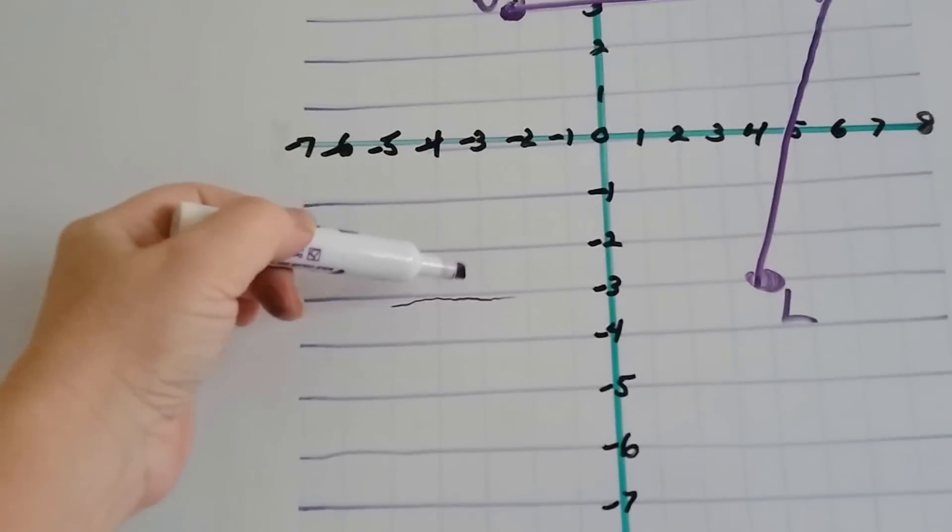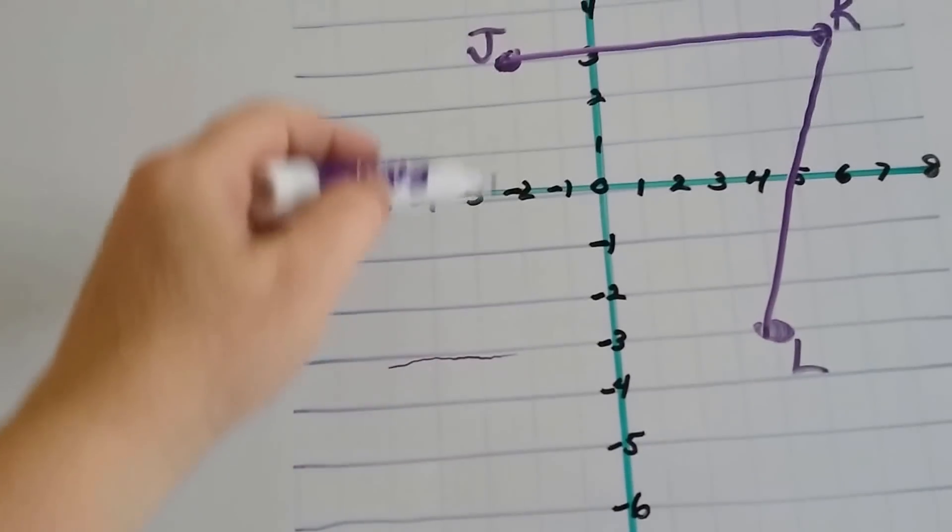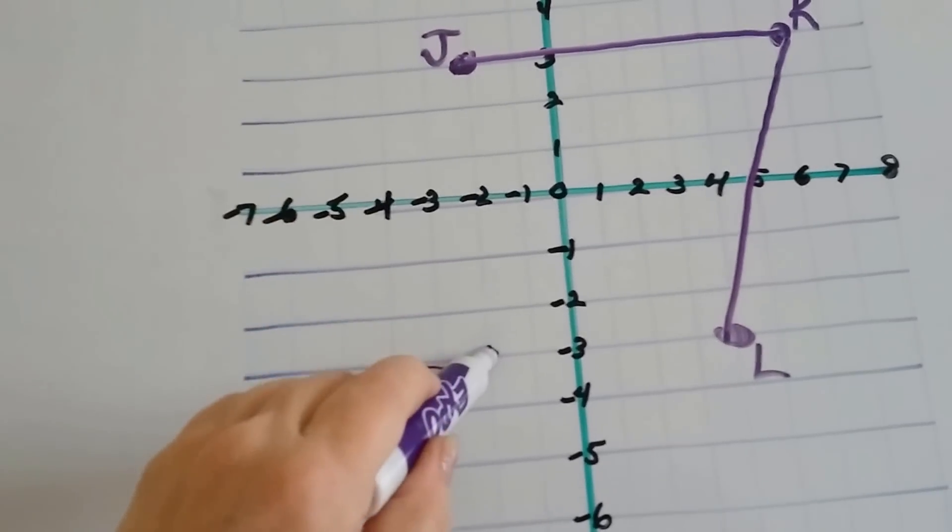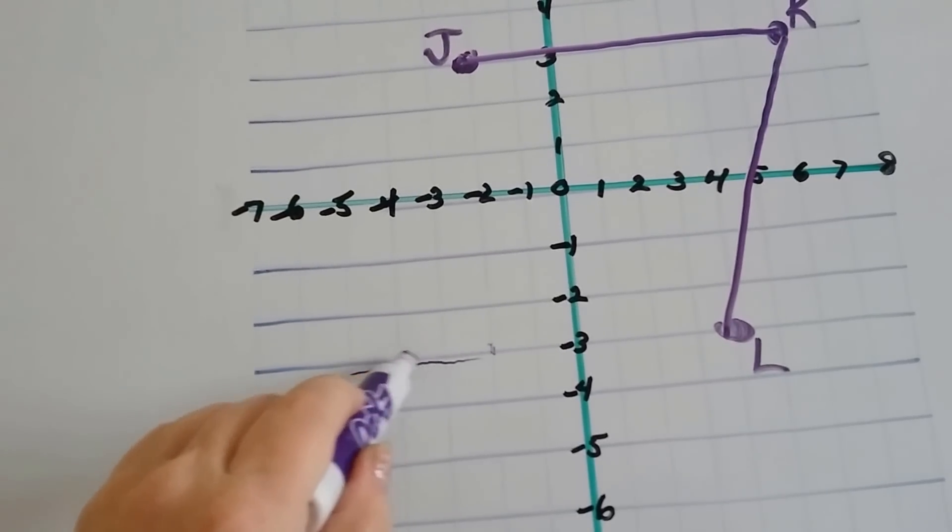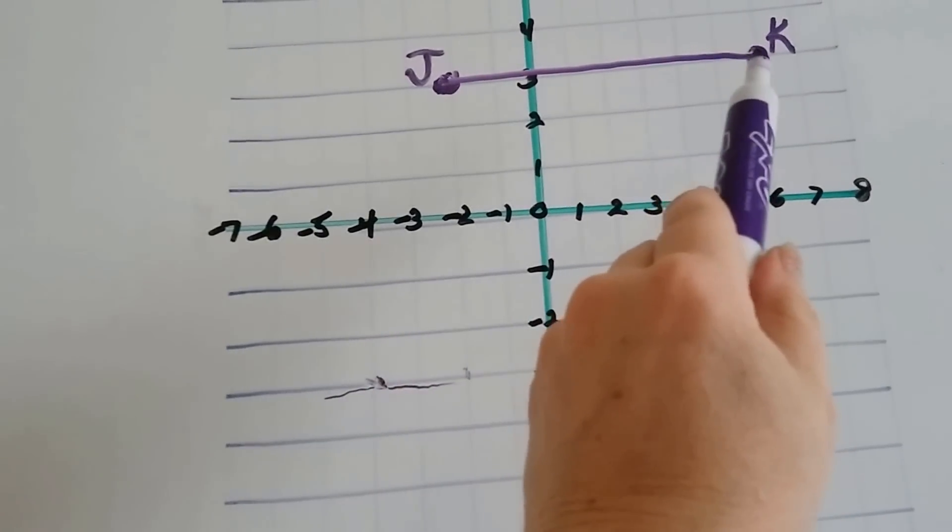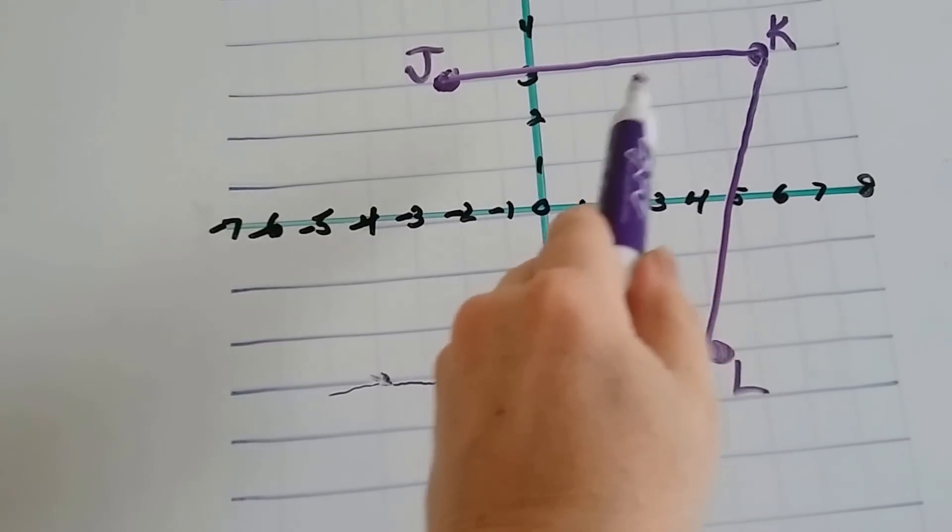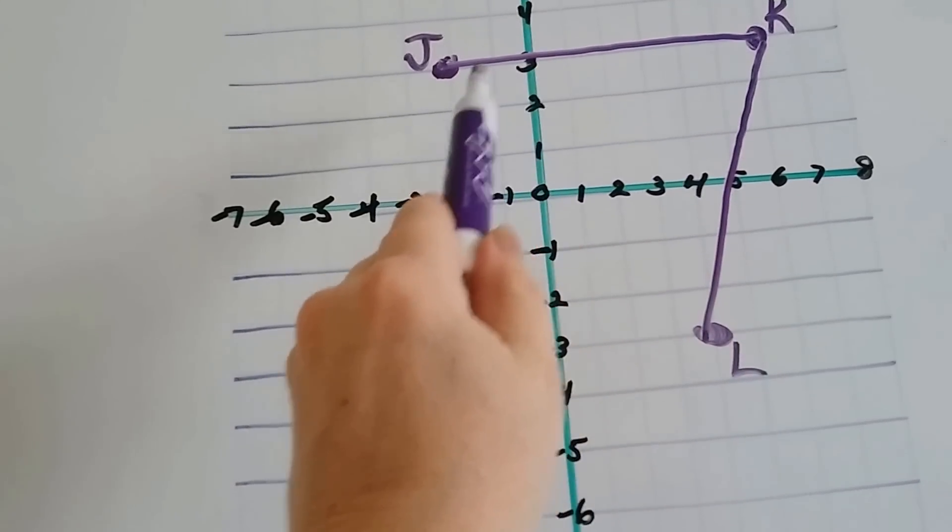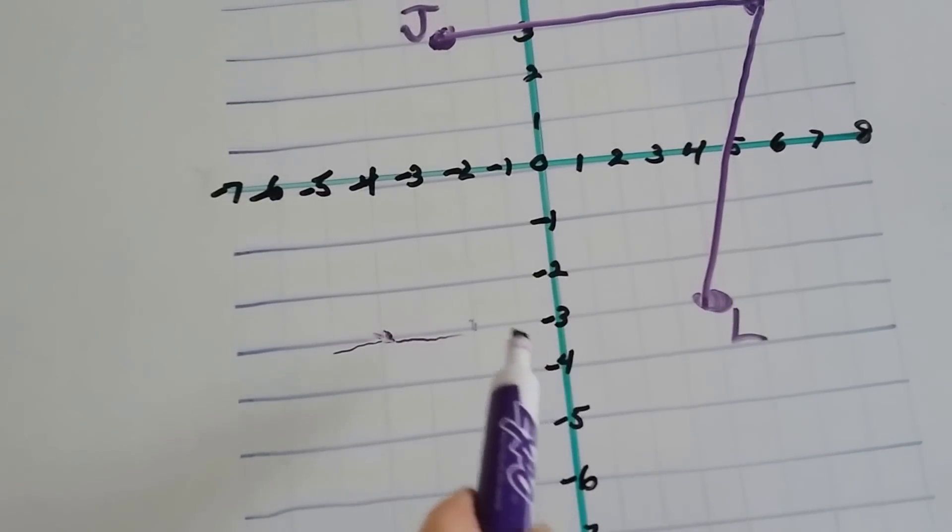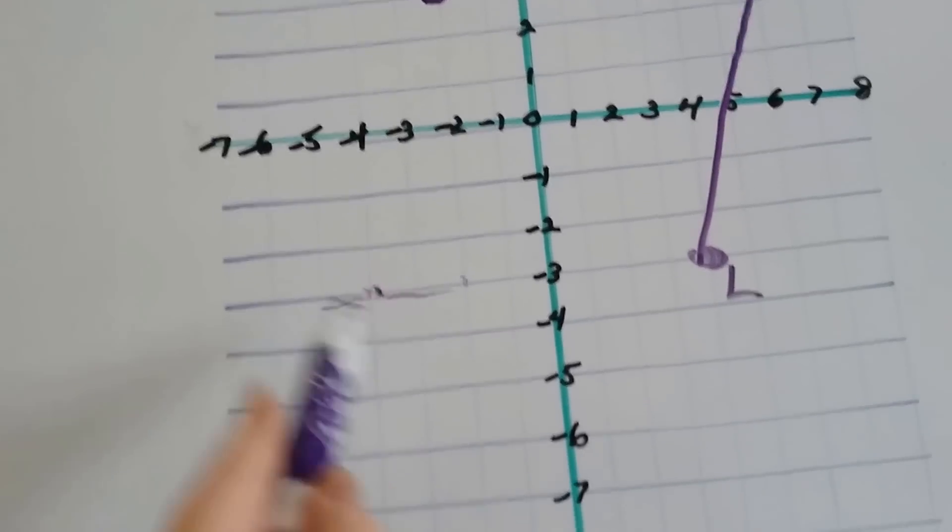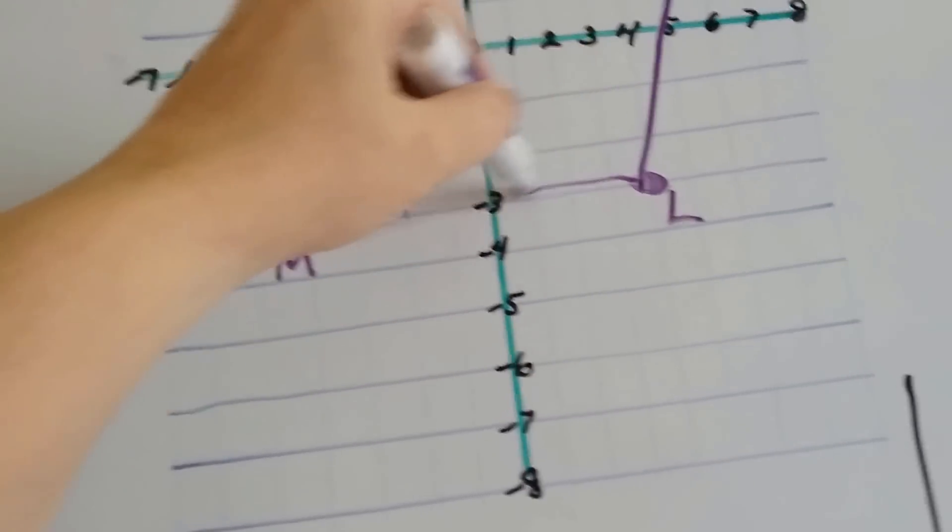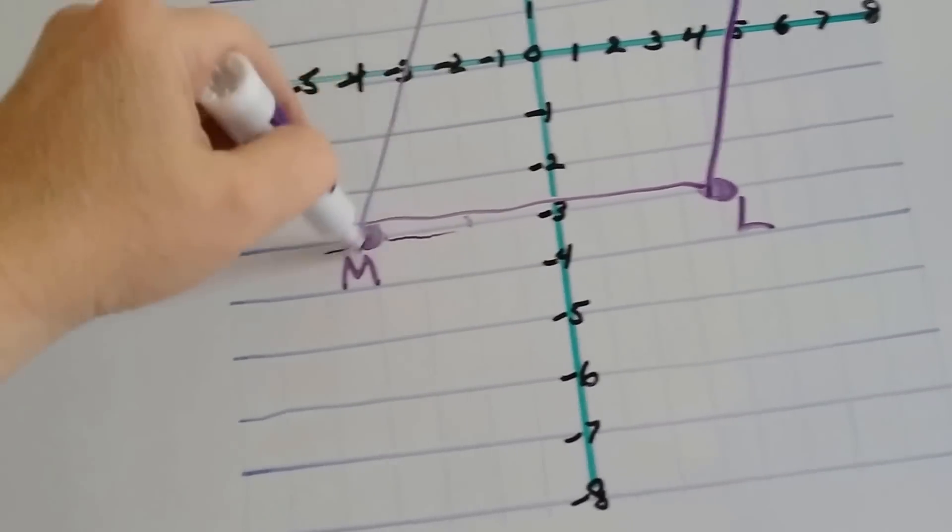So, we know it's on this line. And if it was directly straight down from J, it would be here. But we need to move over to 1, 2. And to double check it, we can count how many units over this one is. 1, 2, 3, 4, 5, 6, 7, 8. 1, 2, 3, 4, 5, 6, 7, 8. Perfect. So, we know that that is M. And now we can connect them all.